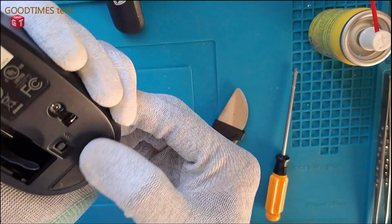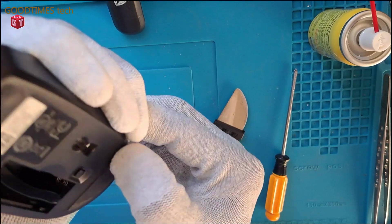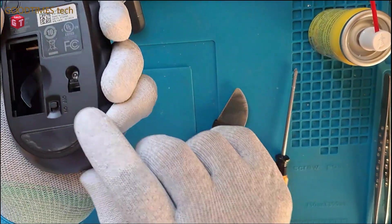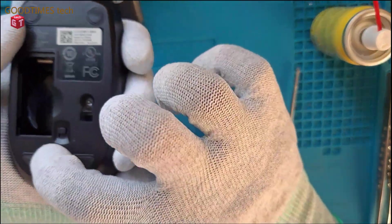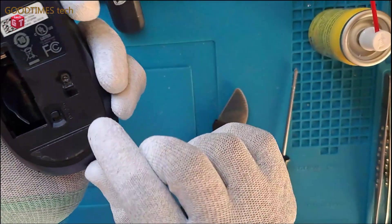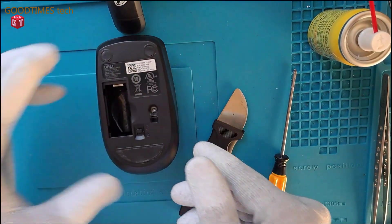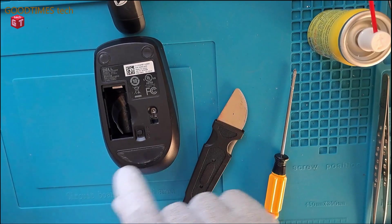Okay, seal it back. If you feel that the adhesion property of this rubber base has been lost or is not so good, then you can apply double-sided sticker or any rubber base adhesive, a thin coat of rubber base adhesive, and then fix it.